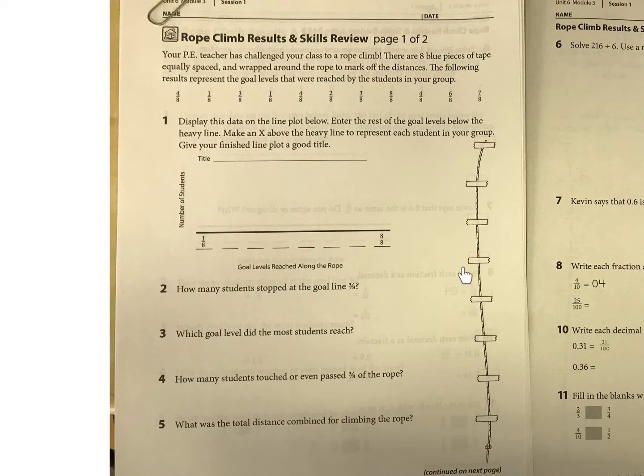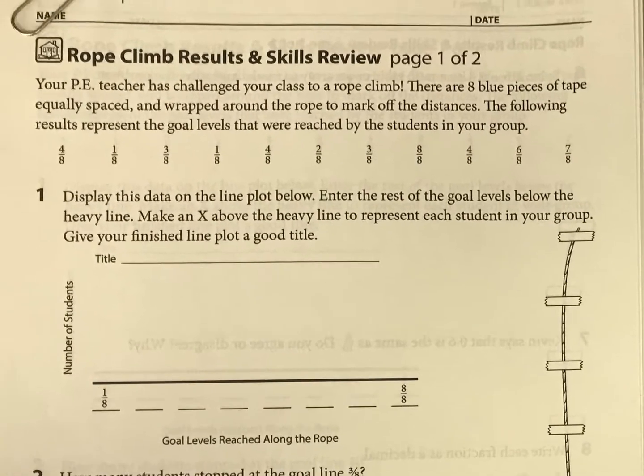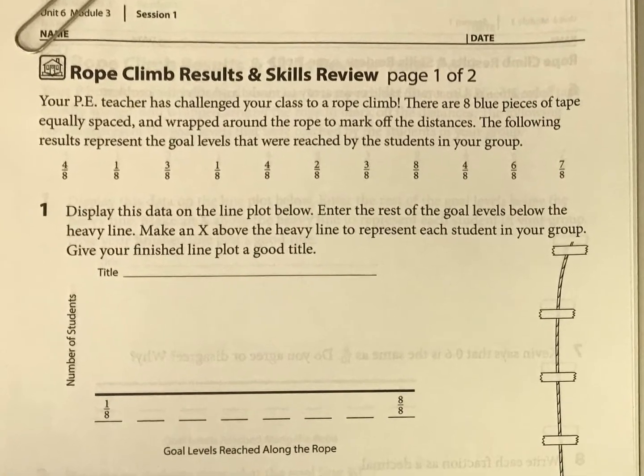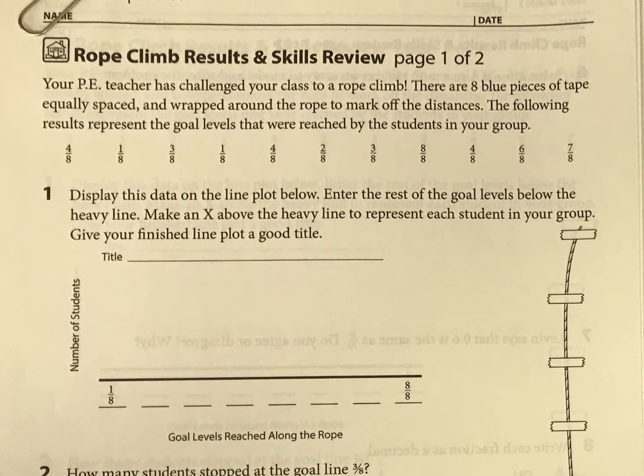And they've measured that in eighths, I think. One eighth, two eighths, three eighths, four eighths, five eighths, six eighths, seven eighths, eight eighths would be the top of the rope. So how high did each student climb on this rope? So basically, we are combining data and fractions here, and you need to think of a title. So maybe something like PE rope climbs, and then for this part, we're just going to fill in fractions of eighths all the way up.